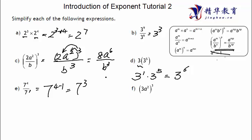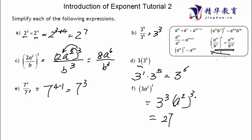I'm doing these pretty quickly, so if you find it hard to follow, please pause the video and make sure you understand. The last one: three to the power of three times A to the power of two, all to the power of three. Three to the power of three is 27, and A squared to the power of three — power of power equals power multiply — gives A to the power of six.